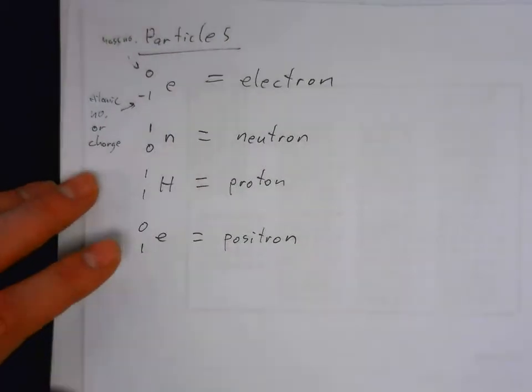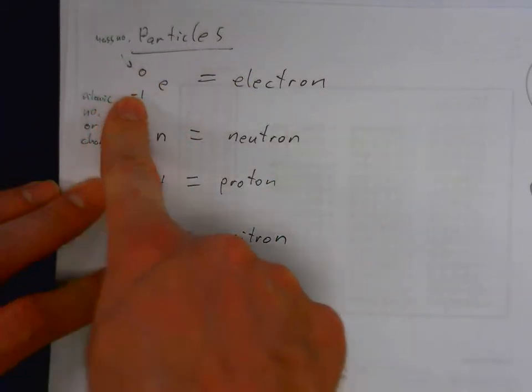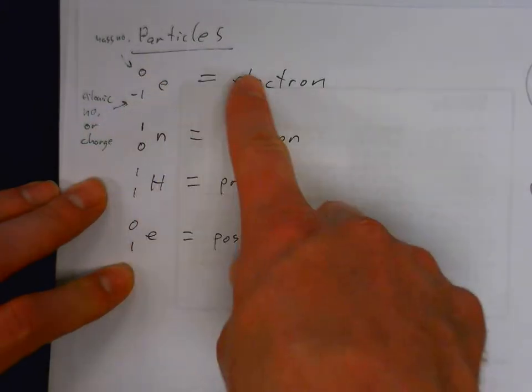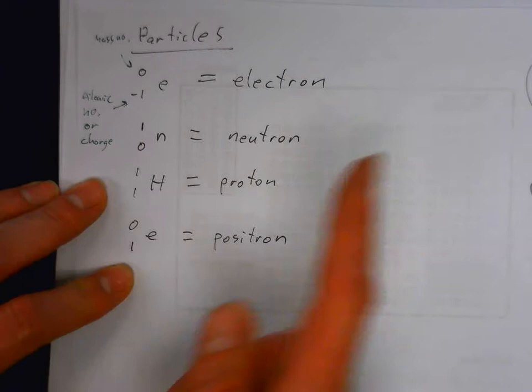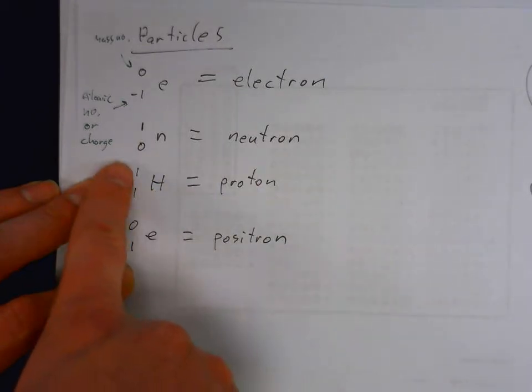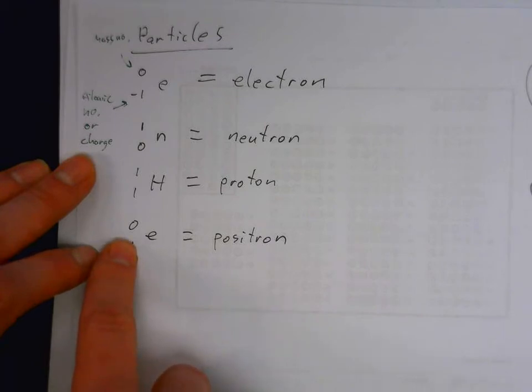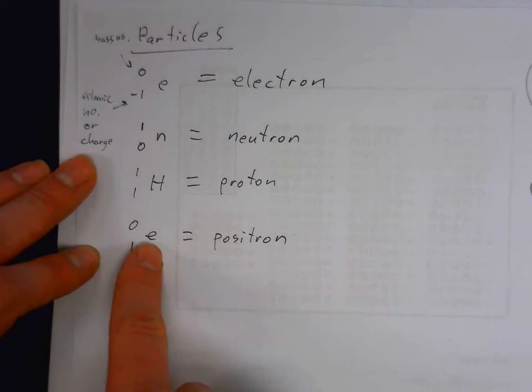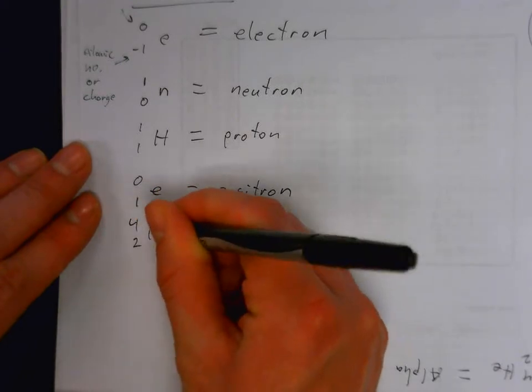In order to do these problems we'll need to know the particles that could form. Here are the particles: an electron, zero over negative one; neutron, one over zero; a proton shown with a hydrogen symbol, one over one; a positron, zero over one e; and an alpha particle, four over two helium.